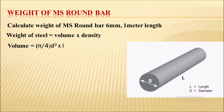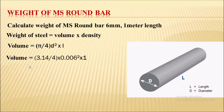Volume is area into length. The area for this circular shape is pi by 4 times d-squared, multiplied by length L. Now substituting the values: pi = 3.14, divided by 4, into diameter squared — here diameter is 6 mm, converted to 0.006 meters — squared, into 1 meter length.